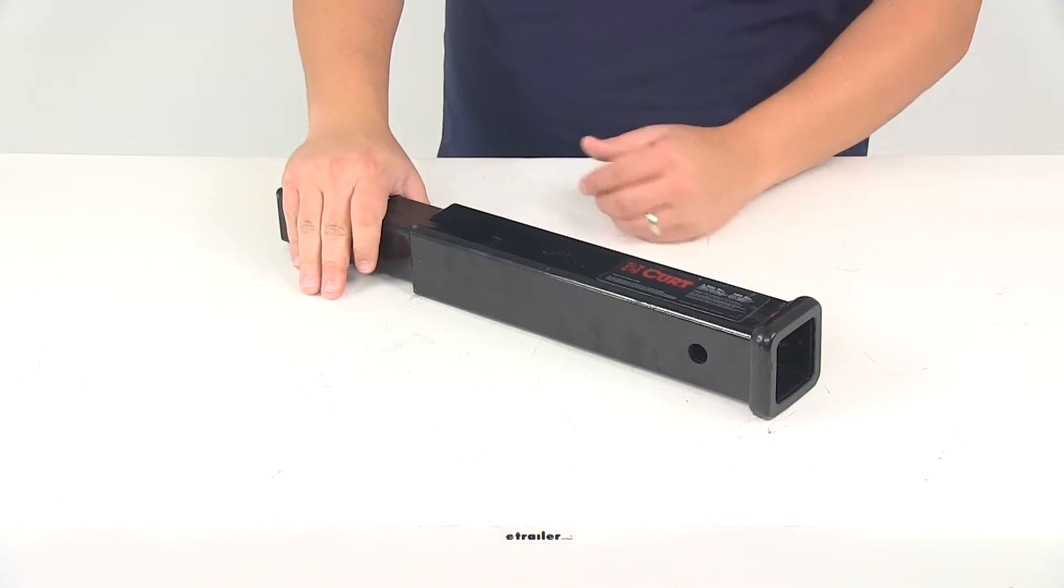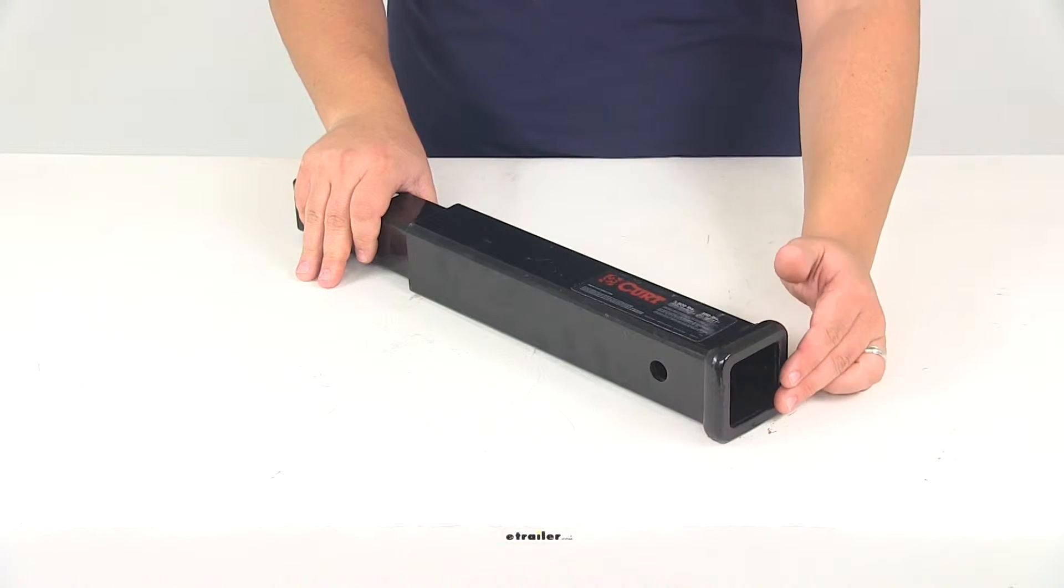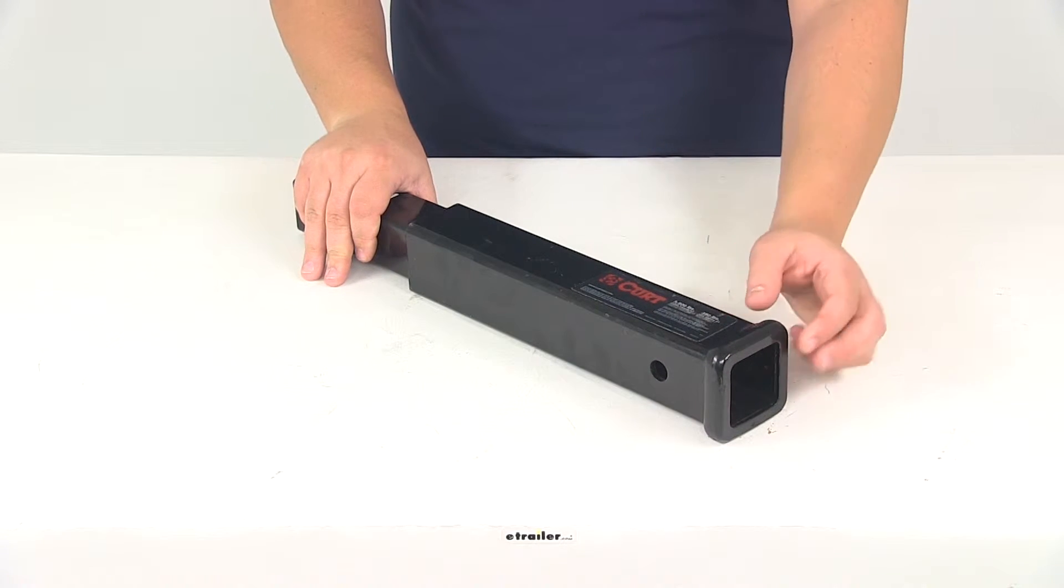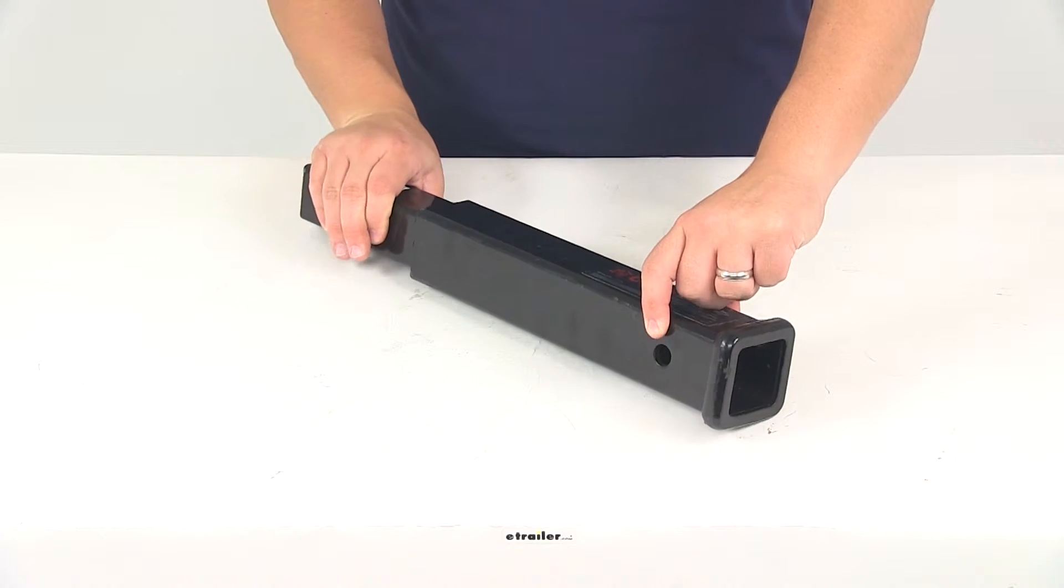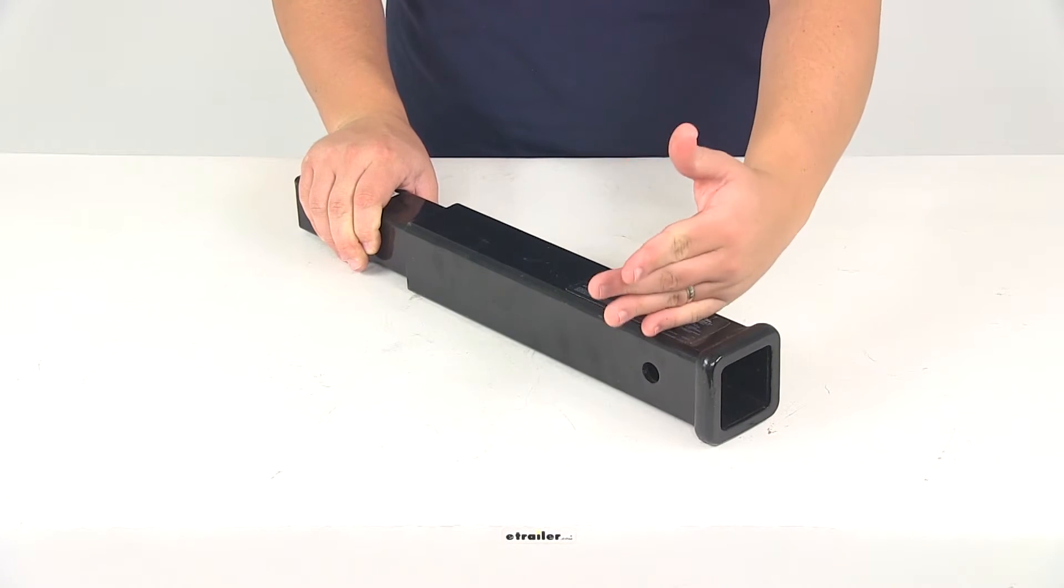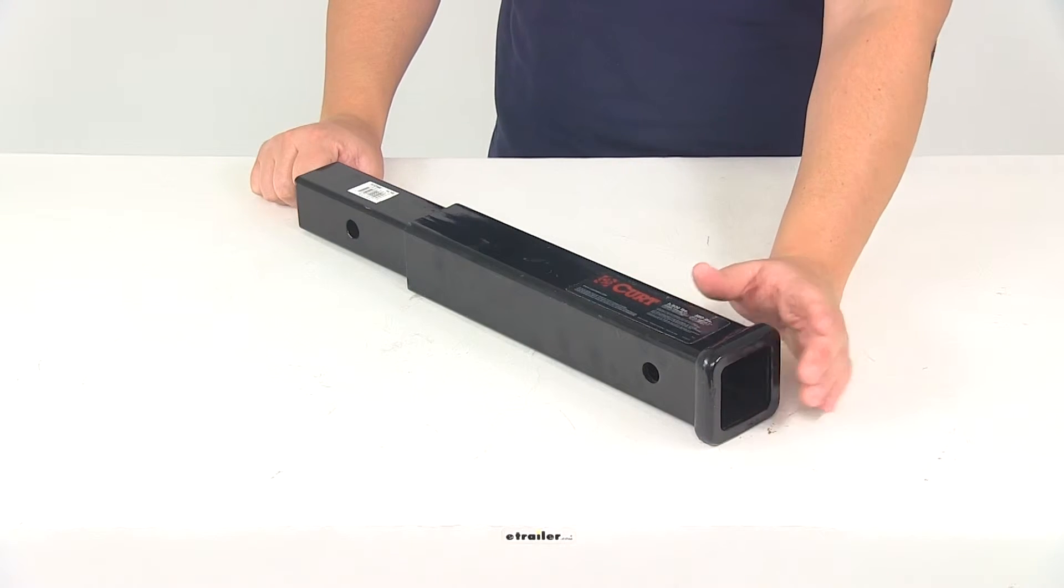Once you have that secured, your accessory or whatever it is would go into the 2-inch by 2-inch receiver opening. It's got the collar around it and it's going to have your standard 5 1/8 inch pinhole. Again, you'll need to secure that with the hitch pin and clip or hitch lock, whatever it is that you're putting into the opening.